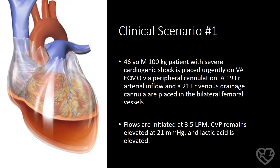In this first scenario, our patient is a 46-year-old male who weighs 100 kilograms, appearing to be in severe cardiogenic shock and needs to be urgently placed on veno-arterial ECMO via peripheral cannulation. Upon getting access and dilating the vessels, the surgeon is able to place a 19 French arterial cannula in the femoral artery and a 21 French multi-stage venous cannula in the femoral vein. ECMO flow is initiated at 3.5 liters per minute and the cannulas are sutured in place.